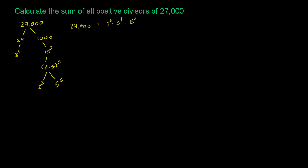So any divisor of 27,000 is going to have to be made up of the product of up to 3 2s, up to 3 3s, and up to 3 5s. So let's try to look at all the combinations and think of a fast way of summing them.